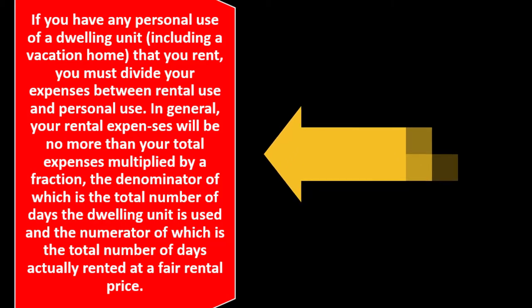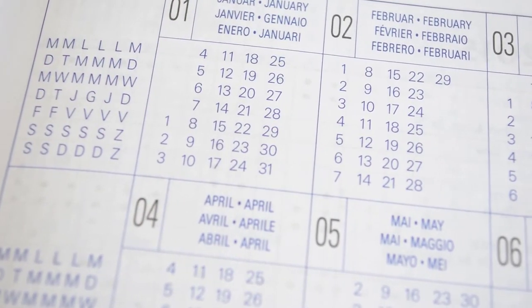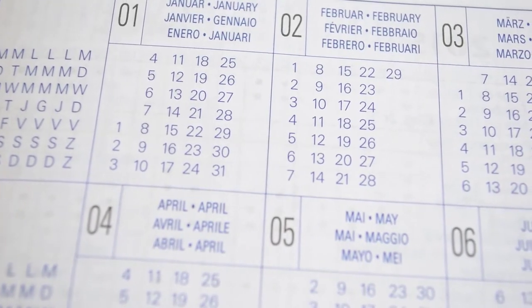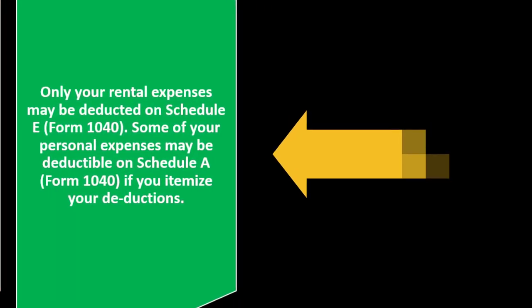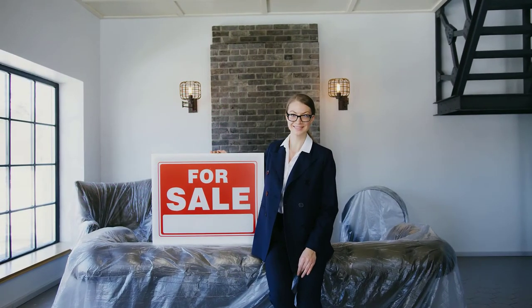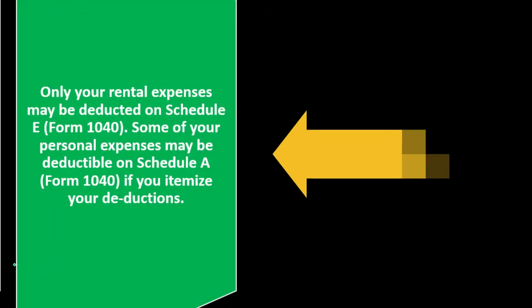We want to be in compliance with the IRS code. The denominator of the fraction is the total number of days the dwelling unit is used — not the total days in a year, but the total days used. The numerator is the total number of days actually rented at a fair rental price. Only your rental expenses may be deducted on Schedule E, Form 1040. Some personal expenses may be deductible on Schedule A, Form 1040, if you're itemizing — similar to situations where you convert a property to rental mid-year or rent part of your home.